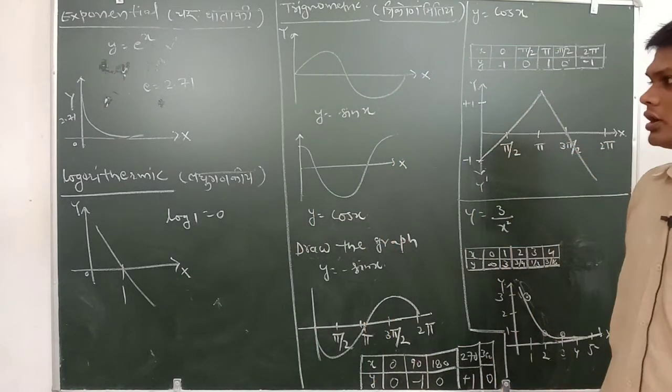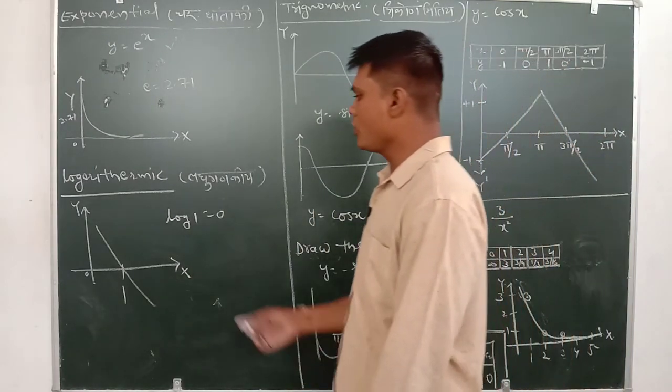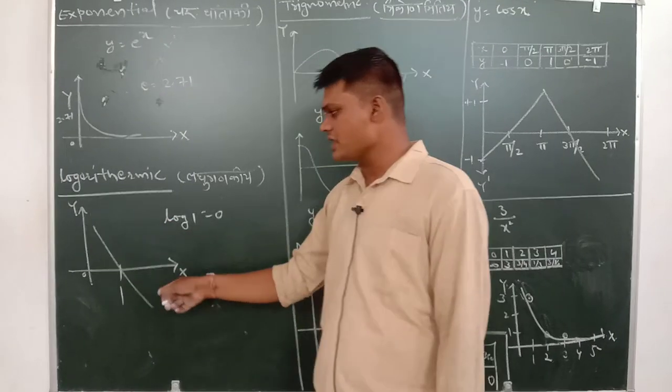For logarithm, log 1 is equal to 0. This graph is always this way.